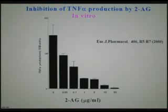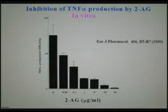2AG — we found that it reduces the production of TNF. We were happy to see that. I'm not going into the technical details; somebody interested, I'll be glad to expand later on. Then we saw that 2AG reduces the production of reactive oxygen intermediates.